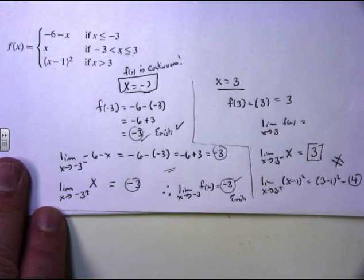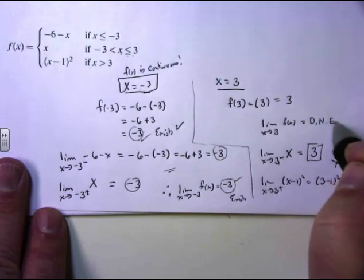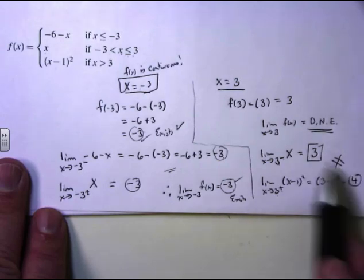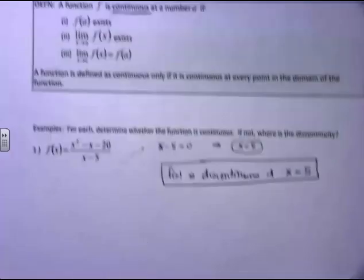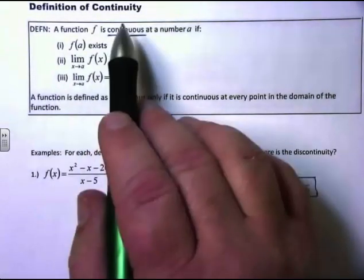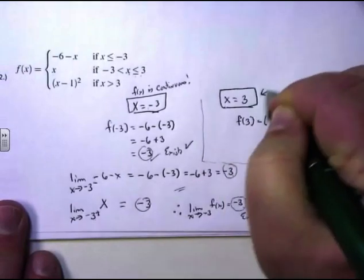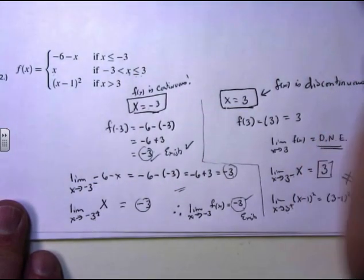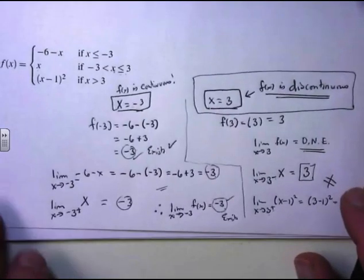The limits are not equal — the limit from below is 3 and the limit from above is 4. For a full limit to exist, the limit from below must equal the limit from above. Since they're not equal, the full limit does not exist. Since the limit doesn't exist, the function is discontinuous at x equals 3.